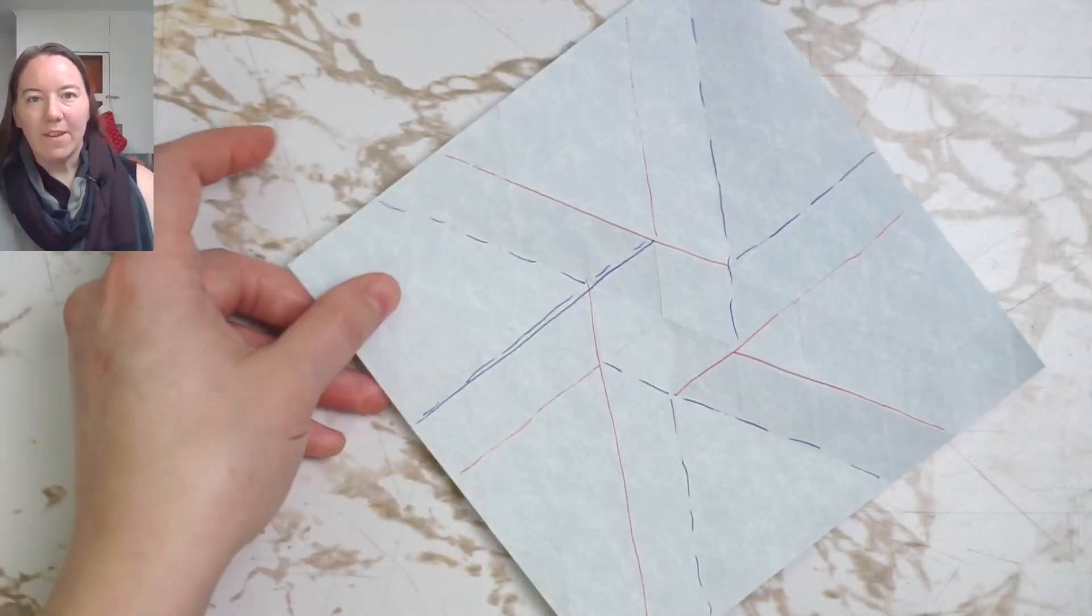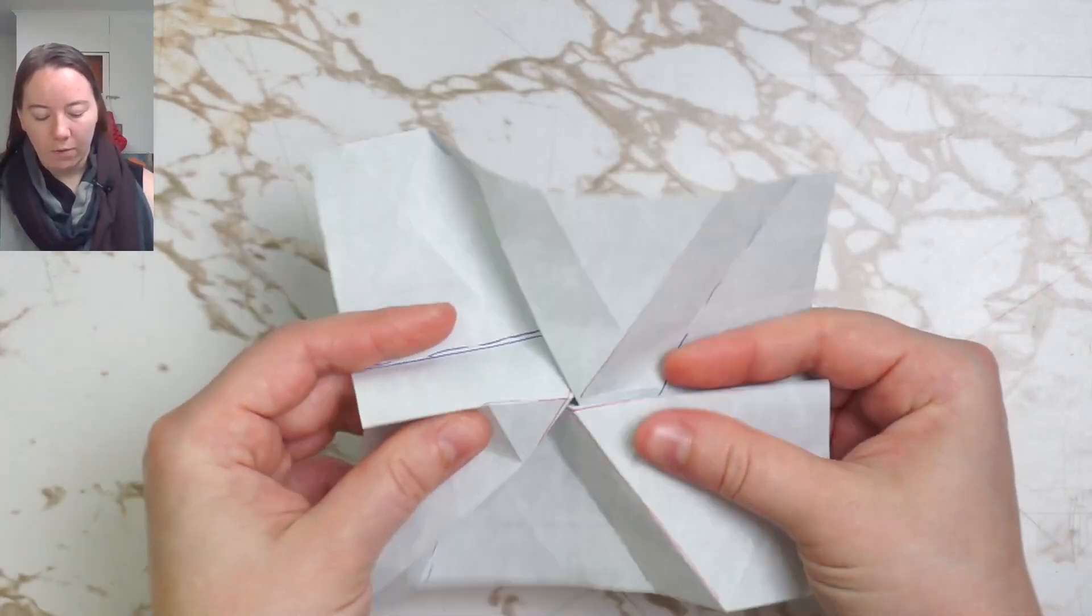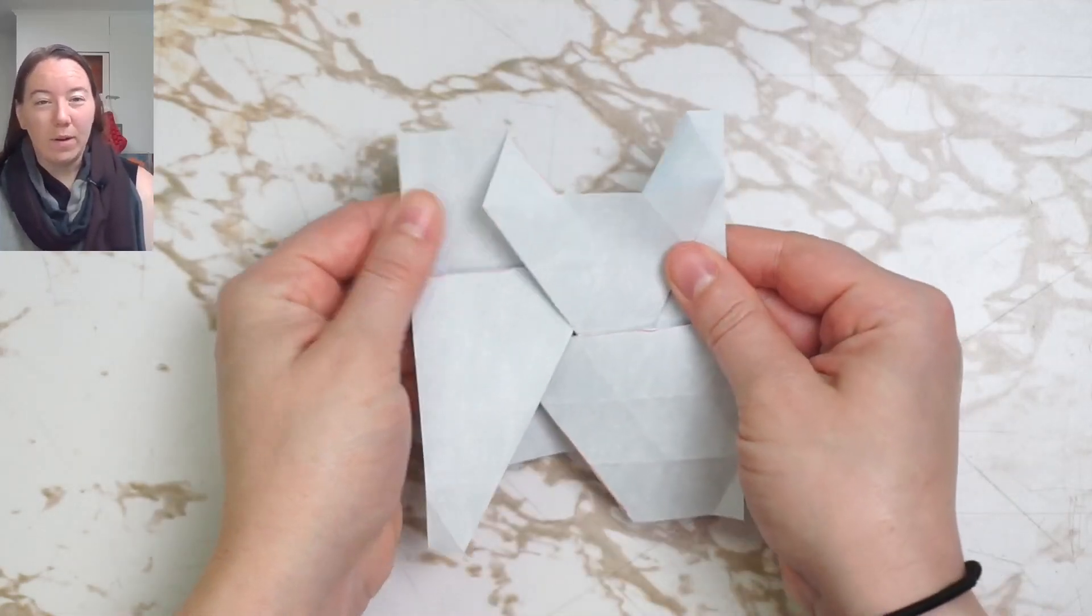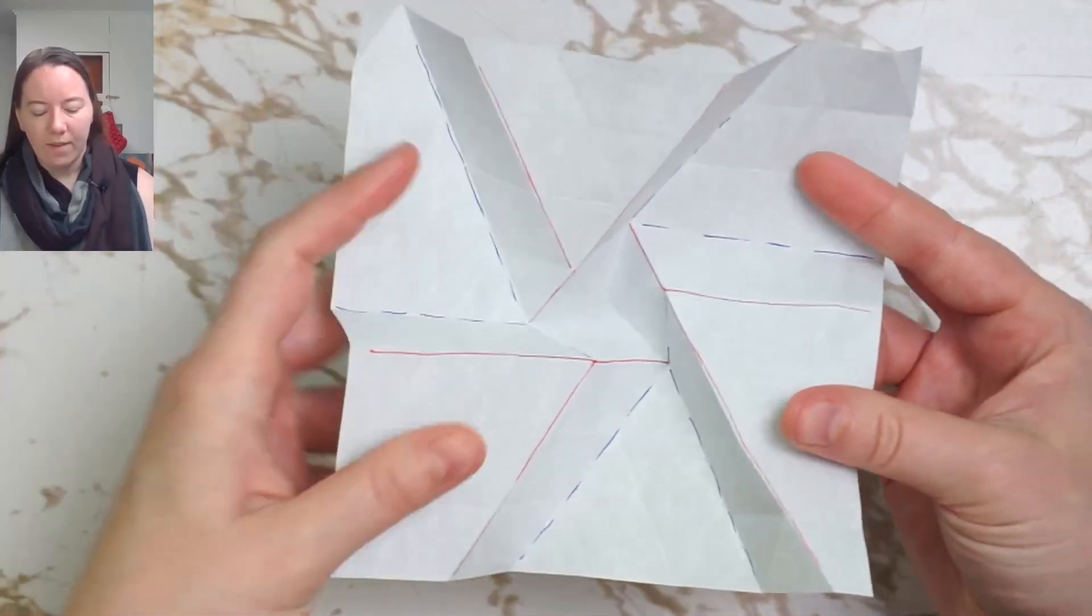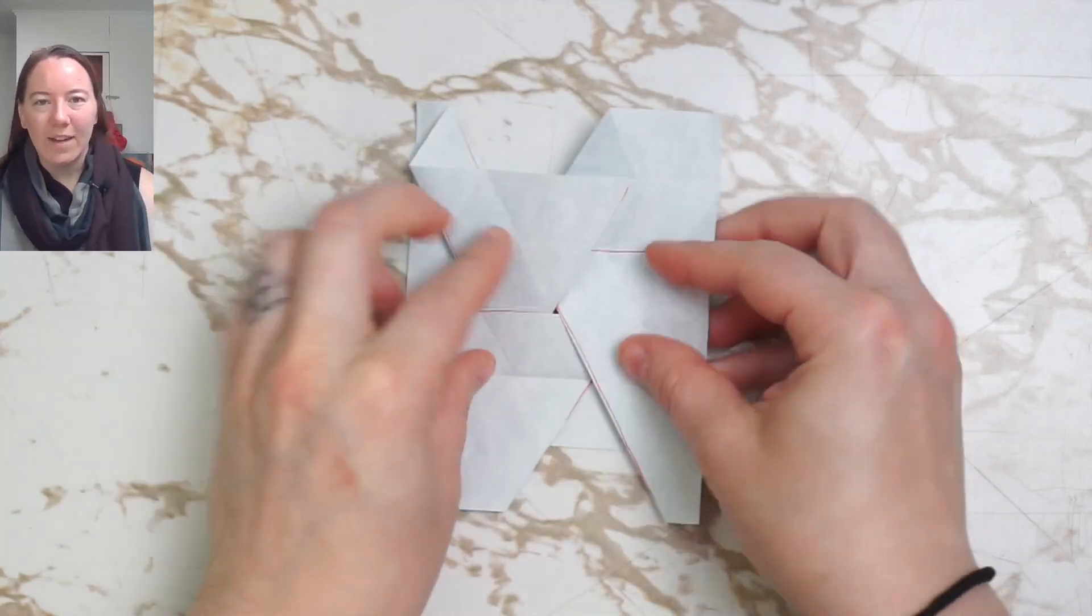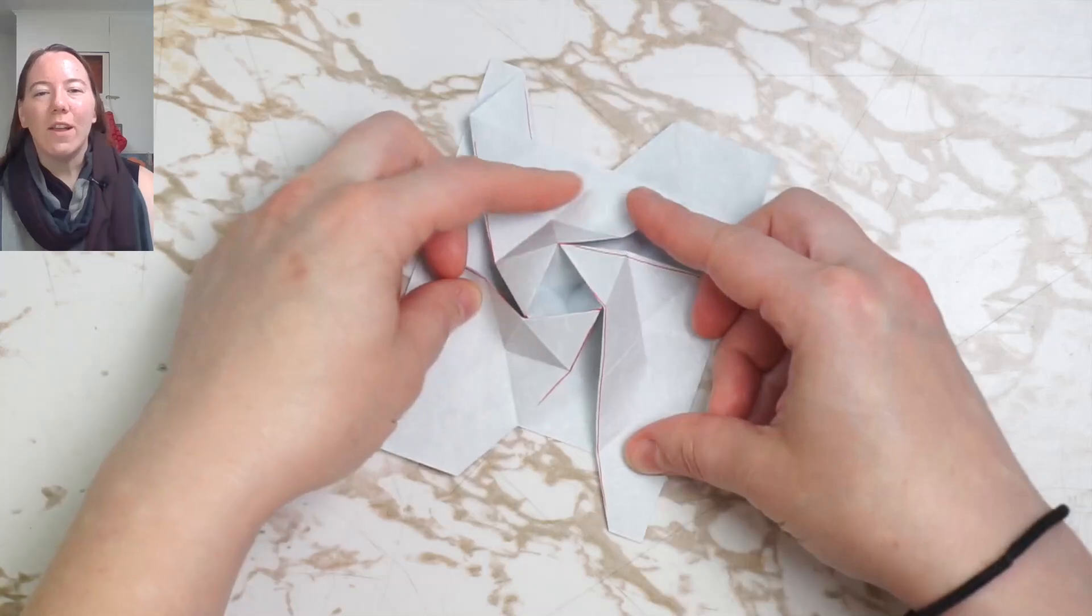And there we have it. The iso area closed hexagon twist can be folded from either side of the paper in exactly the same way. And it doesn't have to be a huge headache. Instead, it can be a source of a lot of fun.